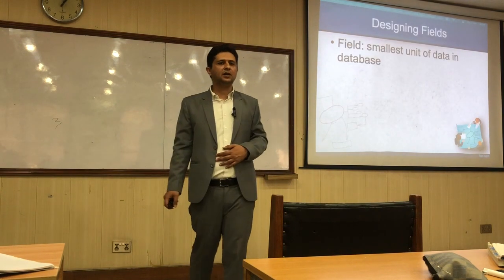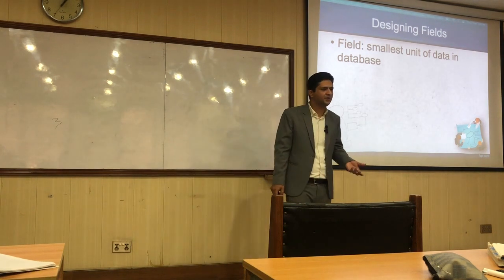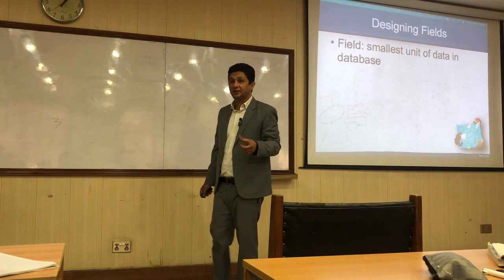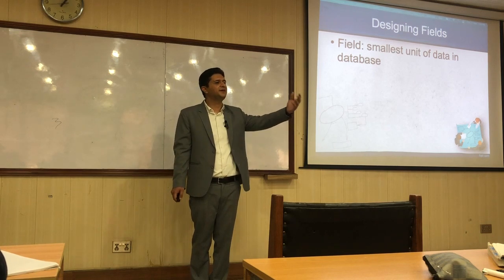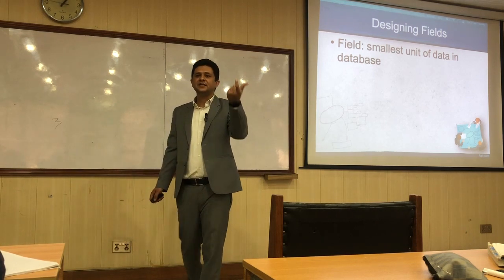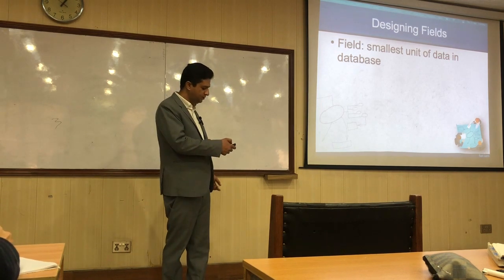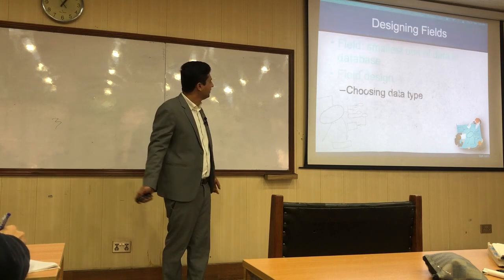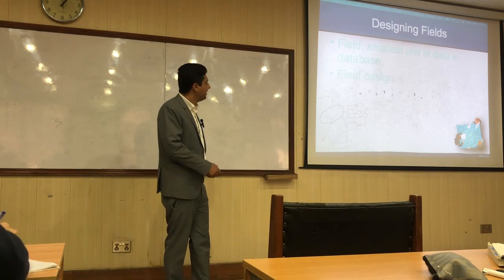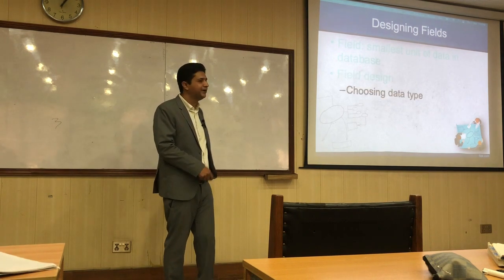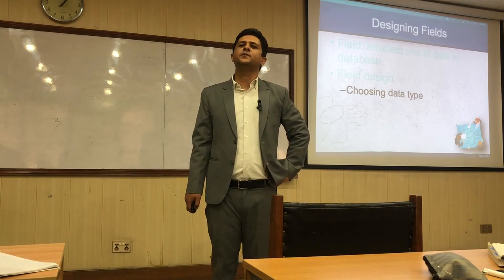The next decision we have to take is the design of a field. A field is basically the smallest unit of data in a database — a column in a table, or relation rather. An attribute converted into an actual database implementation using a database management system results in these fields. Attributes are converted into fields — that is the smallest unit of data.